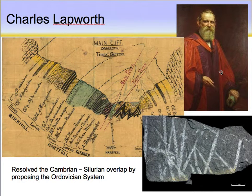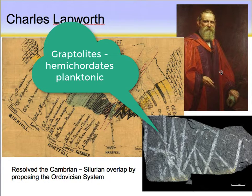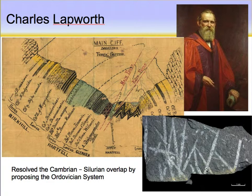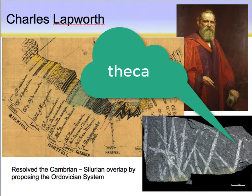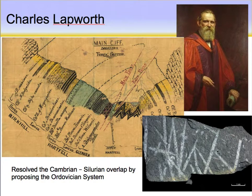Another study that Lapworth did was he studied graptolites, and he realized the significance of these guide or index fossils. Graptolites are planktonic organisms called hemichordates, so they're sort of related to vertebrate organisms. Each of these little stems contains maybe about a hundred little individuals that live in little cups called theca. They float around the ocean, so they're distinctive and recognizable right away. They have a widespread distribution and lived over a relatively short period of time, so they're really good index fossils.